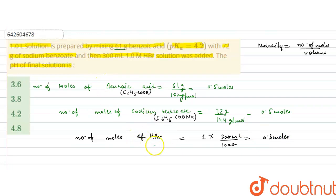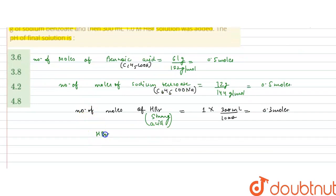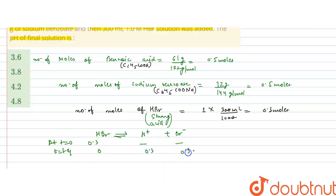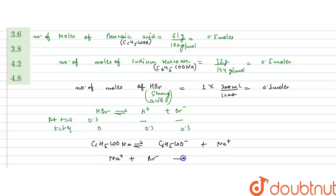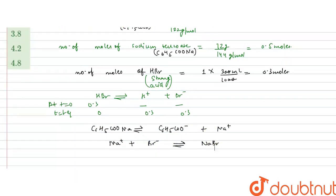HBr is a strong acid, so it will completely dissociate into H⁺ and Br⁻. Initially 0.3 moles of HBr are present; at equilibrium, 0.3 moles of H⁺ and 0.3 moles of Br⁻ will be formed. Sodium benzoate (C6H5COONa) also dissociates into C6H5COO⁻ and Na⁺. The Na⁺ reacts with Br⁻.